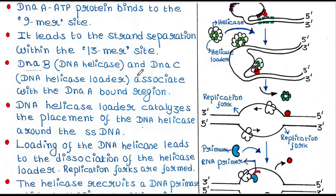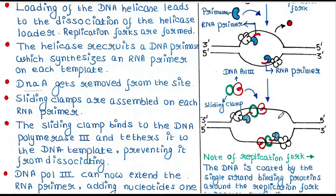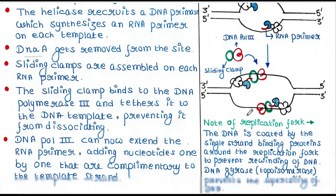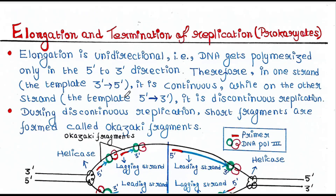We have seen that DNA polymerase starts to extend the RNA primer, adding nucleotides. So elongation is unidirectional — DNA gets polymerized only in the 5' to 3' direction.